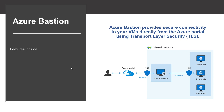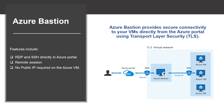Azure Bastion features include direct RDP and SSH in the Azure portal, remote session over TLS and firewall traversal for RDP and SSH, and it opens the RDP/SSH connection to your Azure virtual machine using the private IP on your VM — so you don't need a public IP address. There's also no hassle of managing NSGs, as it's a fully managed platform as a service for Azure that is hardened internally to provide secure RDP/SSH connectivity.